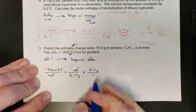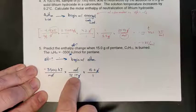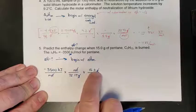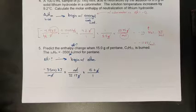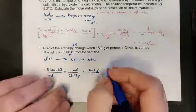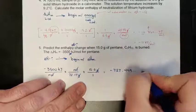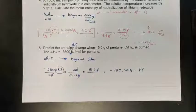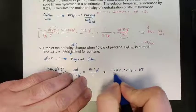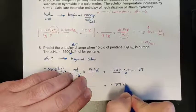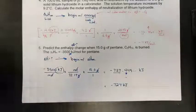Placing the 15 grams on top cancels the grams. So I get 3500 kJ of energy released for every 72.17 g of pentane burned — I'm burning about a fifth of that, so I should get about a fifth of that value. Punching through the calculator gives negative 727.449 kJ. With three significant figures as the limit, the answer is negative 727 kJ, which is my delta H.